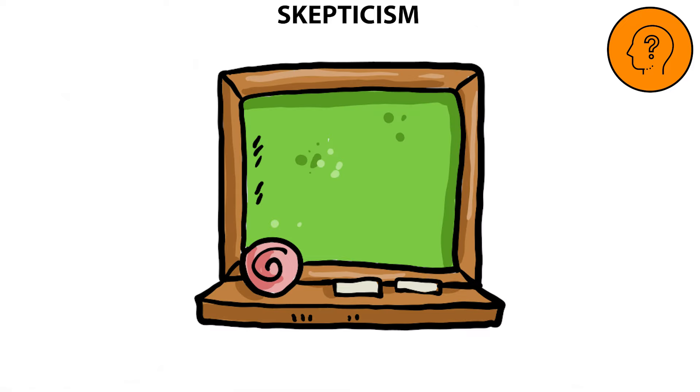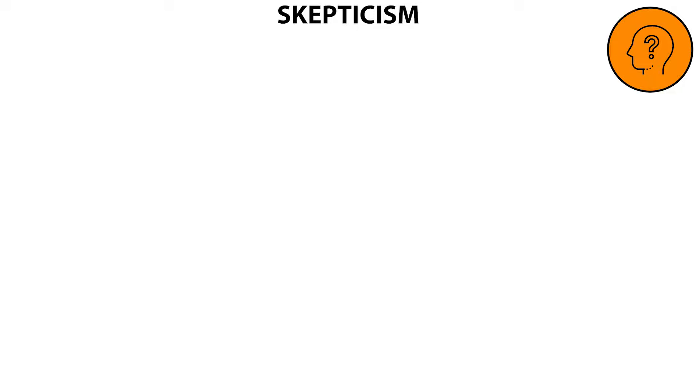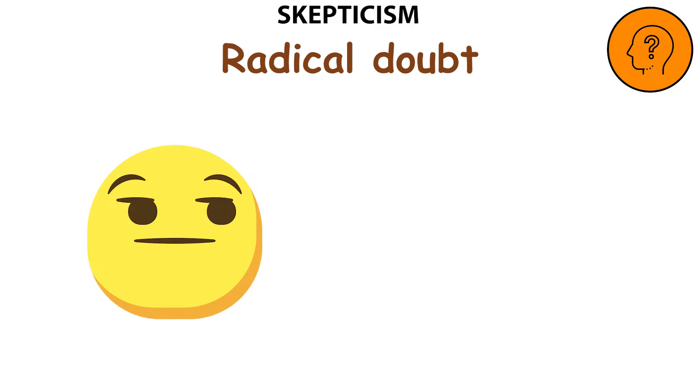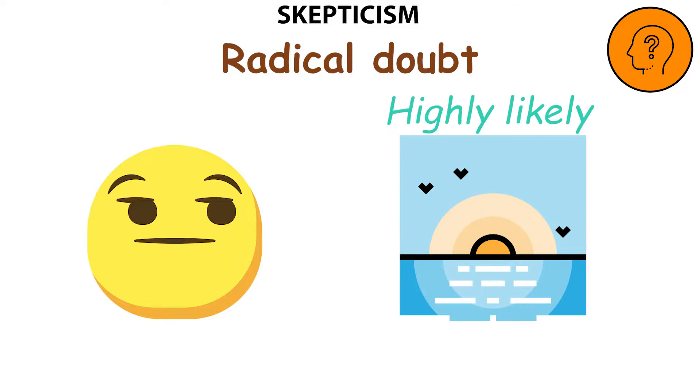One of the most interesting aspects of skepticism is that it even rejects knowledge claims that seem very plausible and belong to basic common sense. This is sometimes referred to as radical doubt. For instance, a skeptic might even question the belief that the sun will come out tomorrow, because although it's highly likely based on our past experiences, it's not 100% certain.